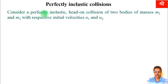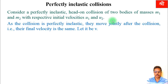Consider a perfectly inelastic head-on collision of two bodies of masses M1 and M2 with respective initial velocities U1 and U2. As the collision is perfectly inelastic, they move jointly after the collision — that is, their final velocity is the same. Let it be V.